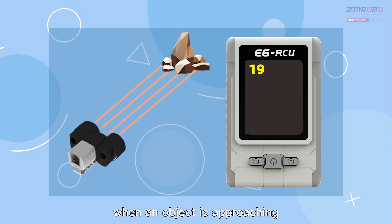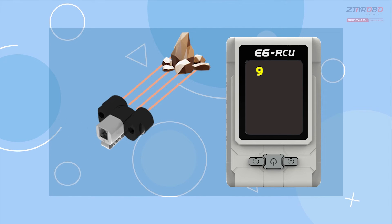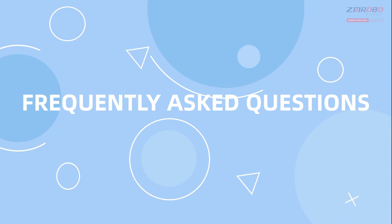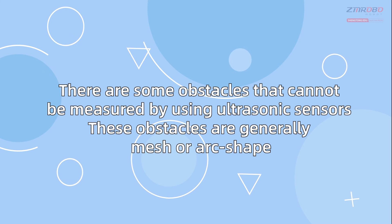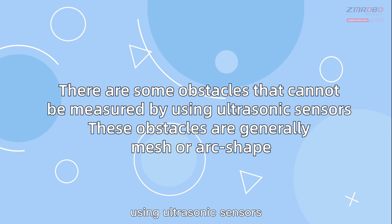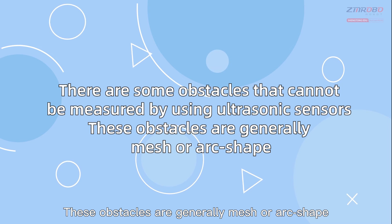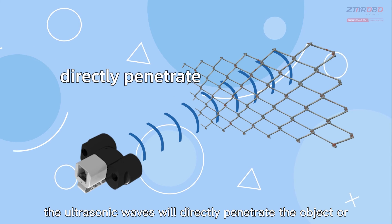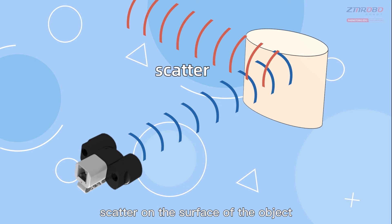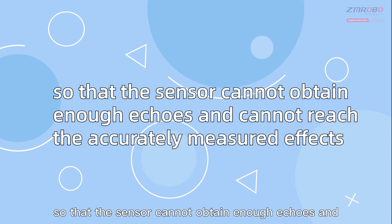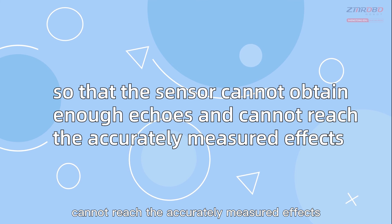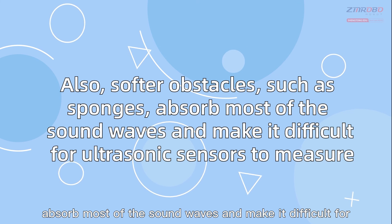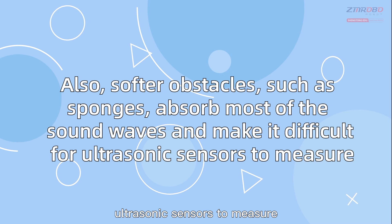Frequently asked questions: there are some obstacles that cannot be measured by ultrasonic sensors. These are generally mesh or arc-shaped objects — ultrasonic waves will directly penetrate or scatter on the surface, so the sensor cannot obtain enough echoes for accurate measurement. Also, softer obstacles such as sponges absorb most of the sound waves, making it difficult for ultrasonic sensors to measure.